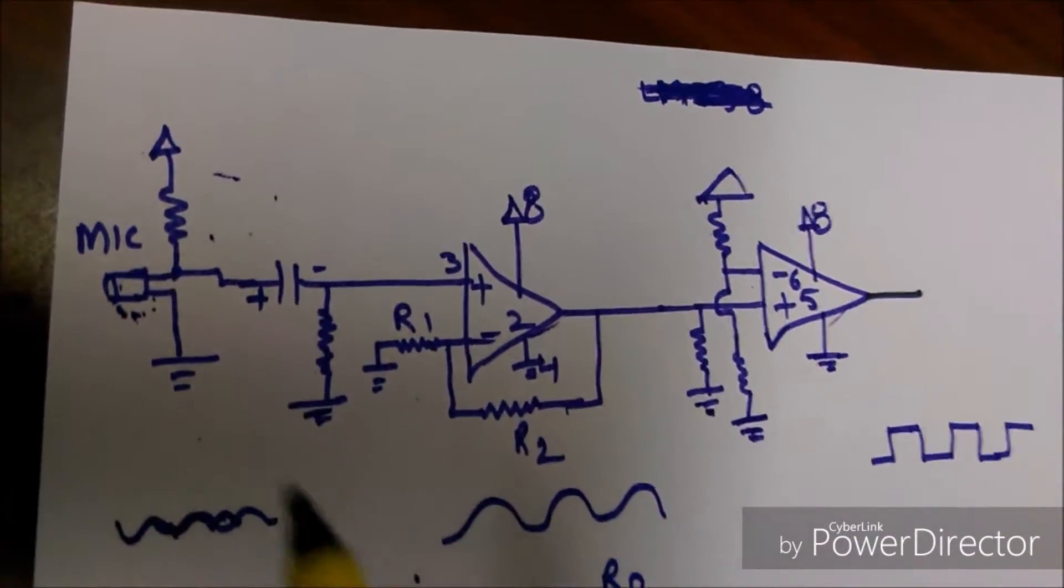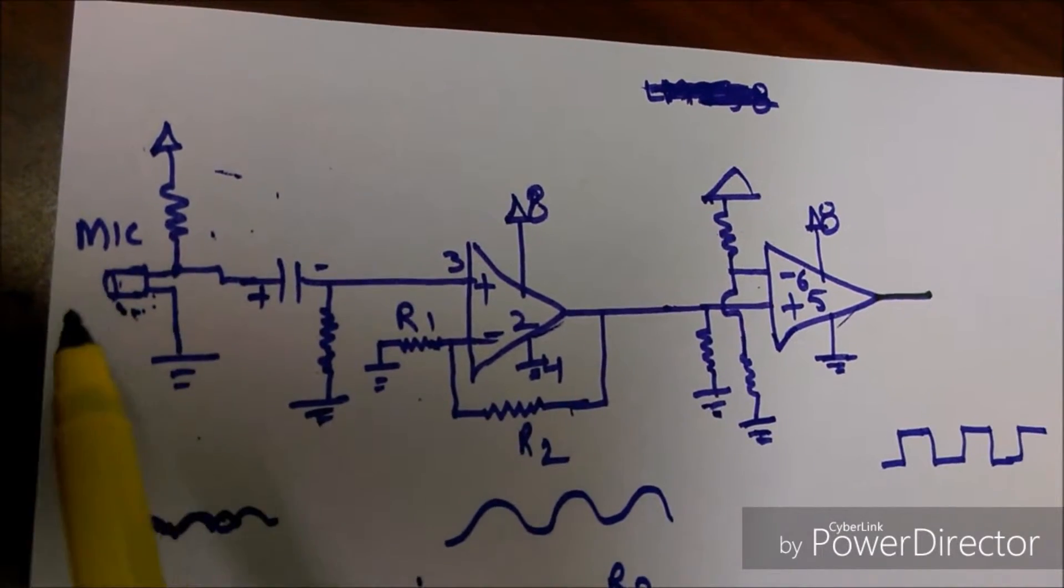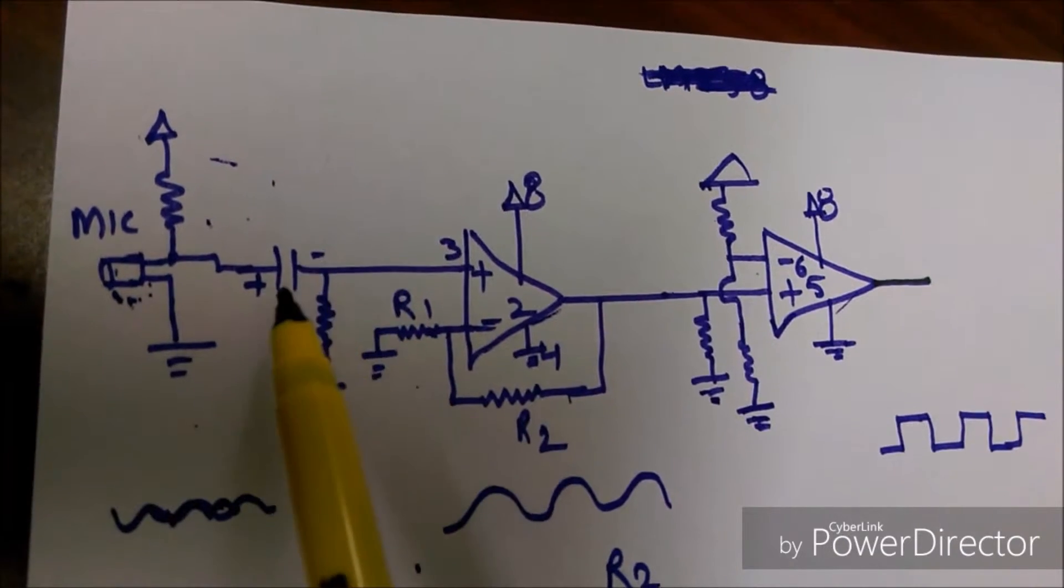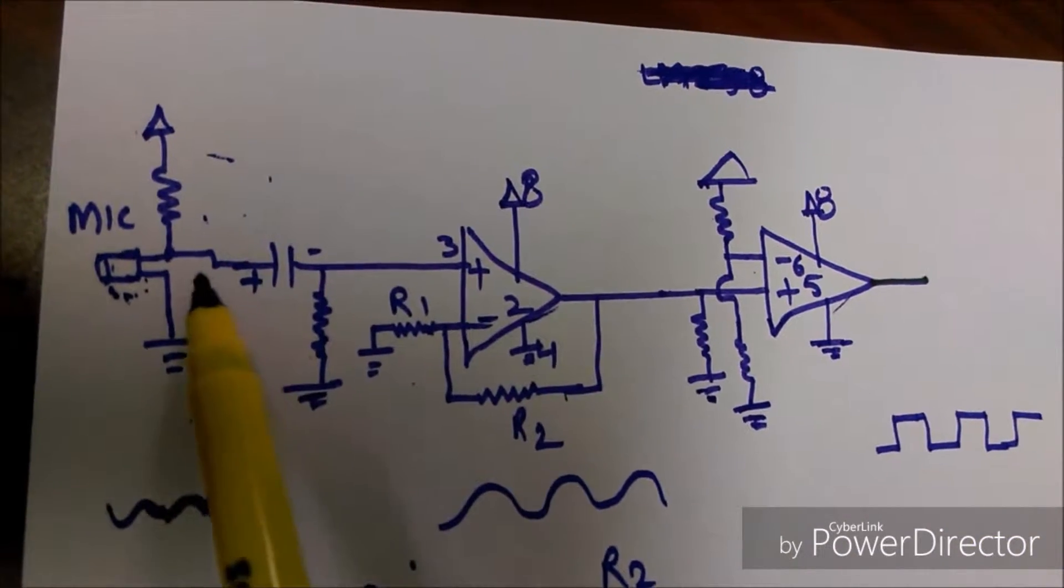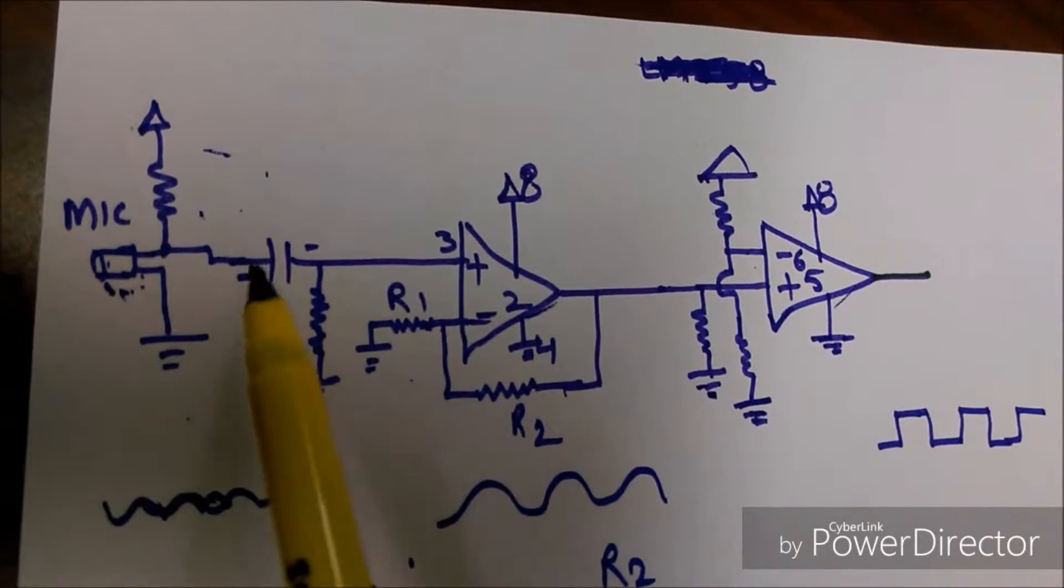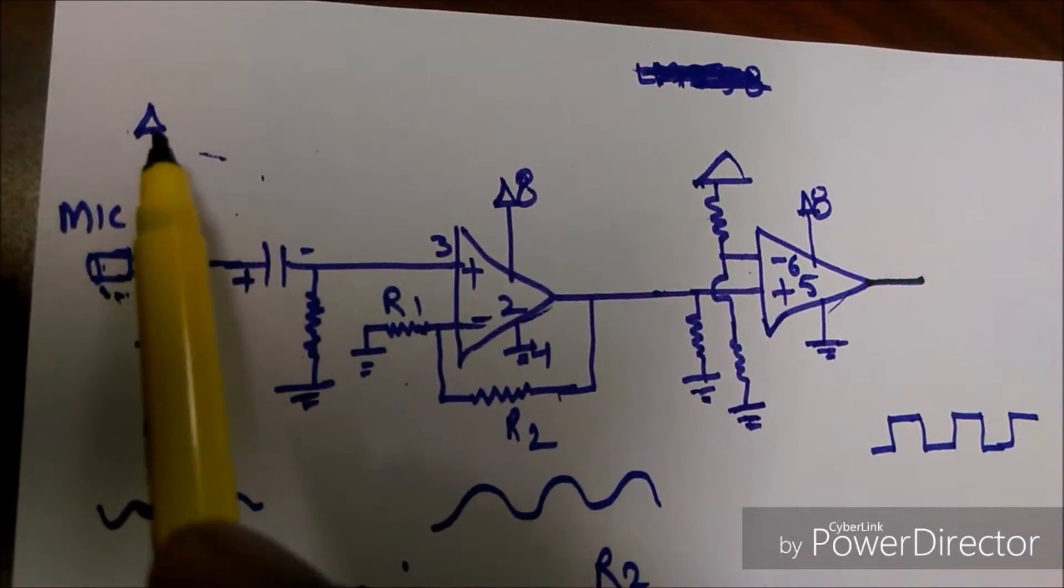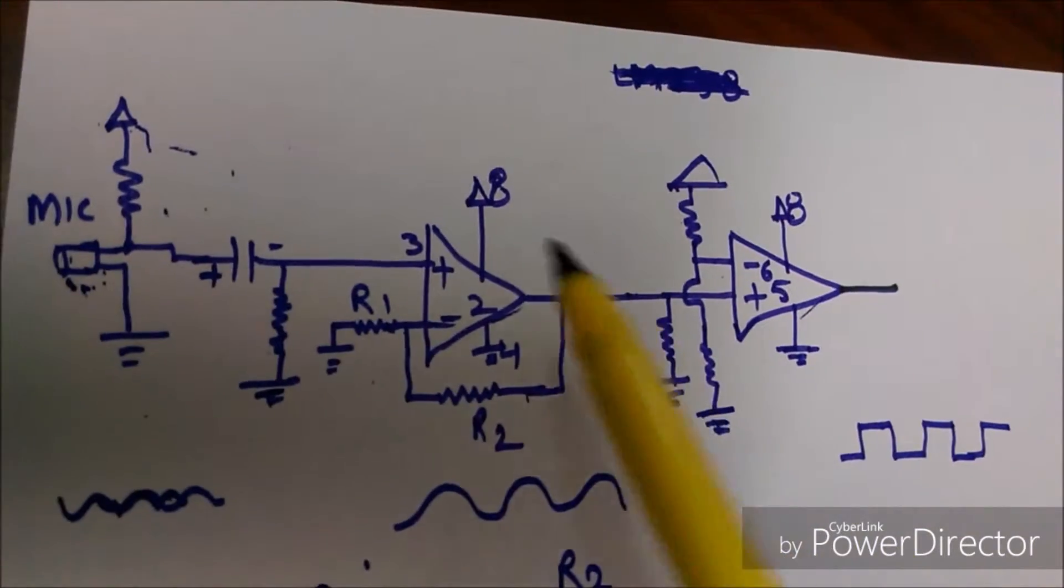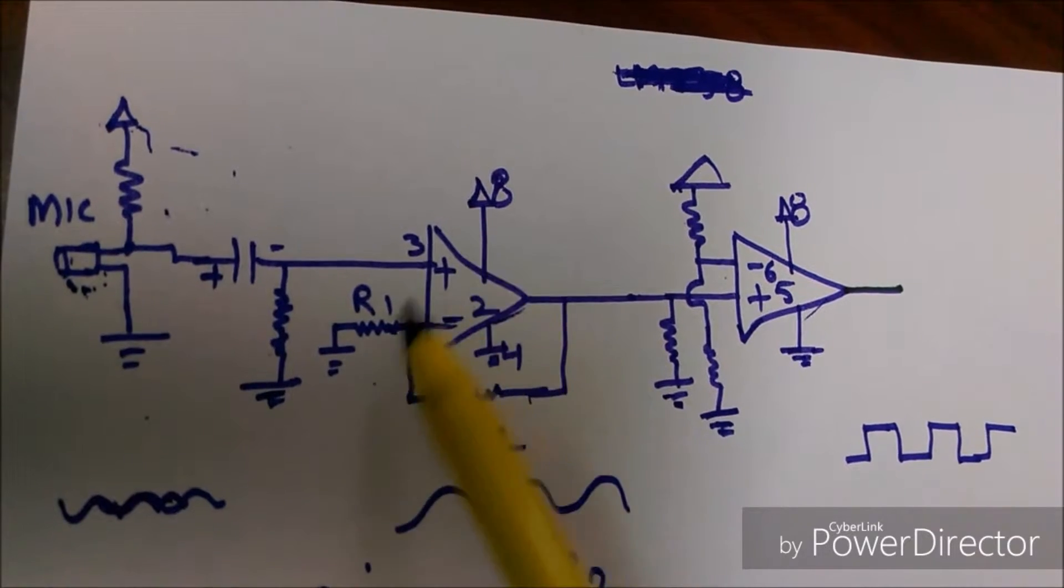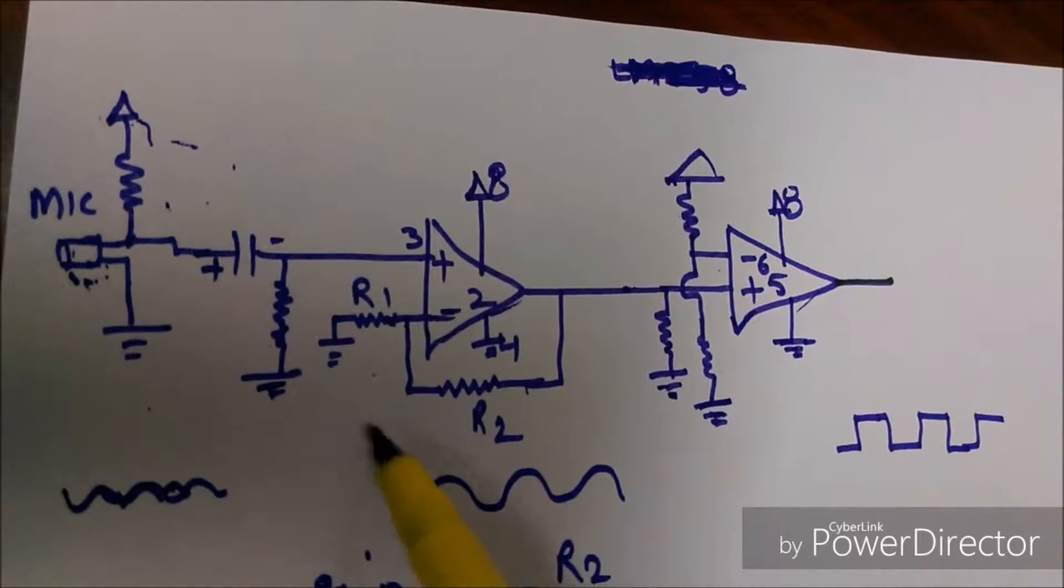When we make any sound, this mic converts the sound signal to an electrical analog signal, and that is sent to this op-amp. This capacitor is used to block all the DC level that is caused by this supply, and this op-amp is used as an amplifier to amplify the signal.